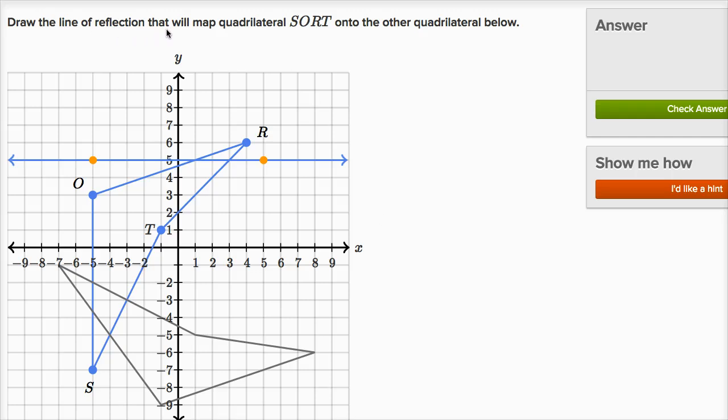We're asked to draw the line of reflection that will map quadrilateral SORT, S-O-R-T, onto the other quadrilateral below. So this is the other quadrilateral right over here. So we want to reflect S-O-R-T so it maps onto this other quadrilateral, and we want to draw or define the line of reflection using this tool right over here.